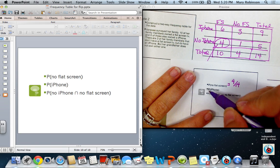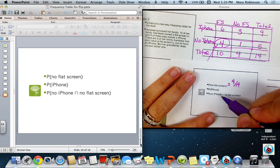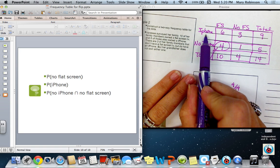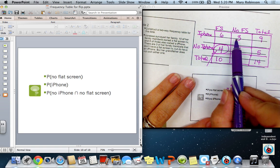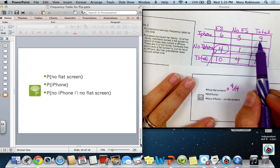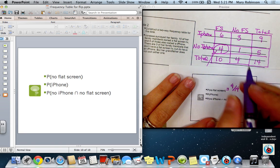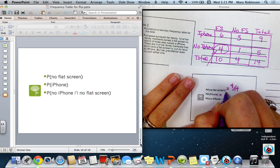Here we go with the probability of someone owning an iPhone. So, let's look at iPhone. There are six that had a flat-screen and three that did not, but nine total did have an iPhone. So, the probability that someone has an iPhone is nine out of fourteen.